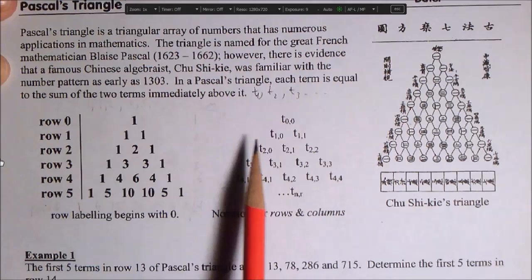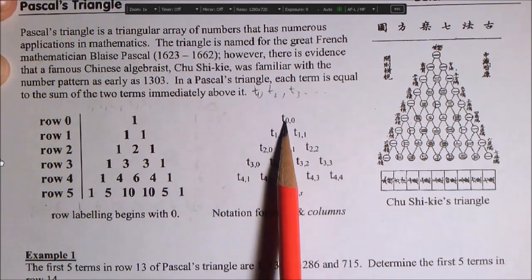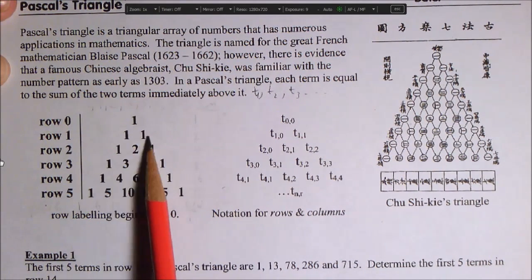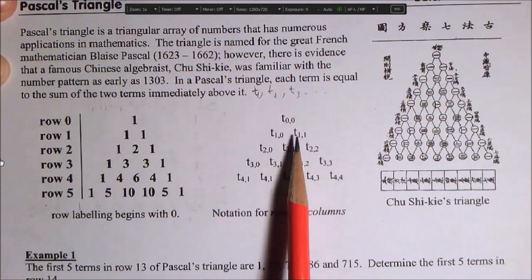So this is term 0 in row 1. Otherwise, sorry, term 0 in row 0. So we call that T00. And in row 1, this is term 0 and this is term 1. So it's T10 and T11.